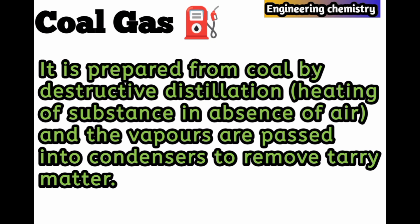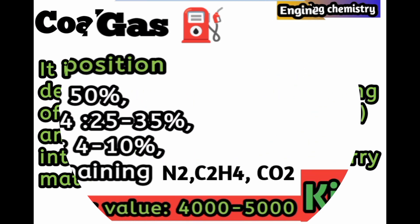In the destructive distillation process, the substance is heated in absence of air, and the vapors are passed into condensers to remove tarry matter. This is how coal gas is prepared from coal.